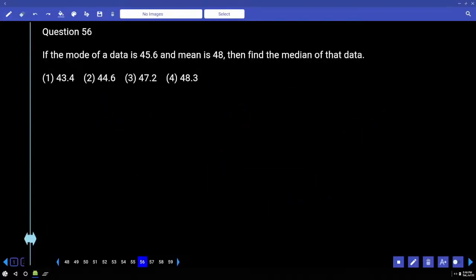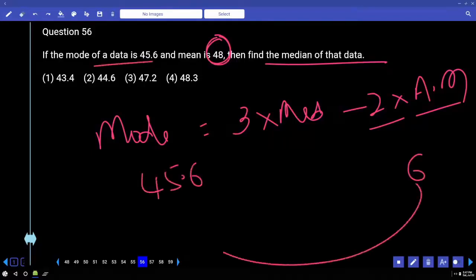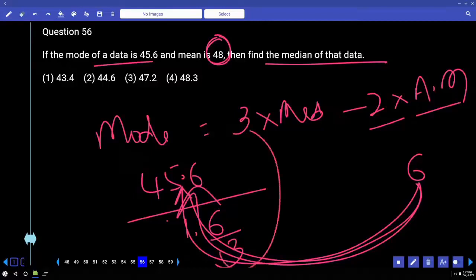If the mode of the data is 45.6 and mean is 48, then find the median. What is the relation? Mode is equal to 3 into median minus 2 into arithmetic mean. That is the relation. Here he is asking for the median. So what is 2 into arithmetic mean? What is the unit digit? What is the unit digit of 2 into 48? 6. What is the unit? This is 45.6. We should add. 1 point. This means 1 point. This is a 6. Option 3, 0.2.